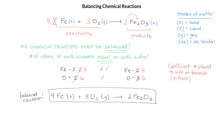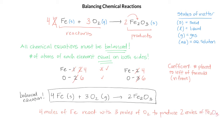The coefficients represent the relative number of reactants and products, and so they are the ratio of the reactants and products in this equation. We can read this equation using moles by saying 4 moles of Fe react with 3 moles of O2 to produce 2 moles of Fe2O3. It's also important to remember that those coefficients are ratios, so we could also say that 8 moles of iron react with 6 moles of O2 to produce 4 moles of Fe2O3.